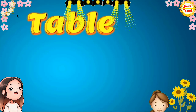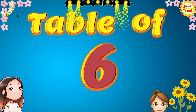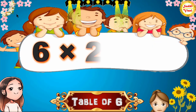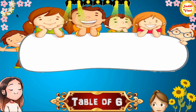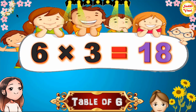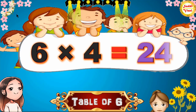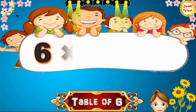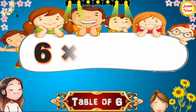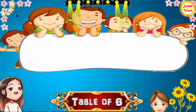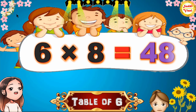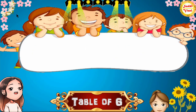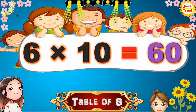Hello children, we will learn table of 6. 6×1=6, 6×2=12, 6×3=18, 6×4=24, 6×5=30, 6×6=36, 6×7=42, 6×8=48, 6×9=54, 6×10=60.